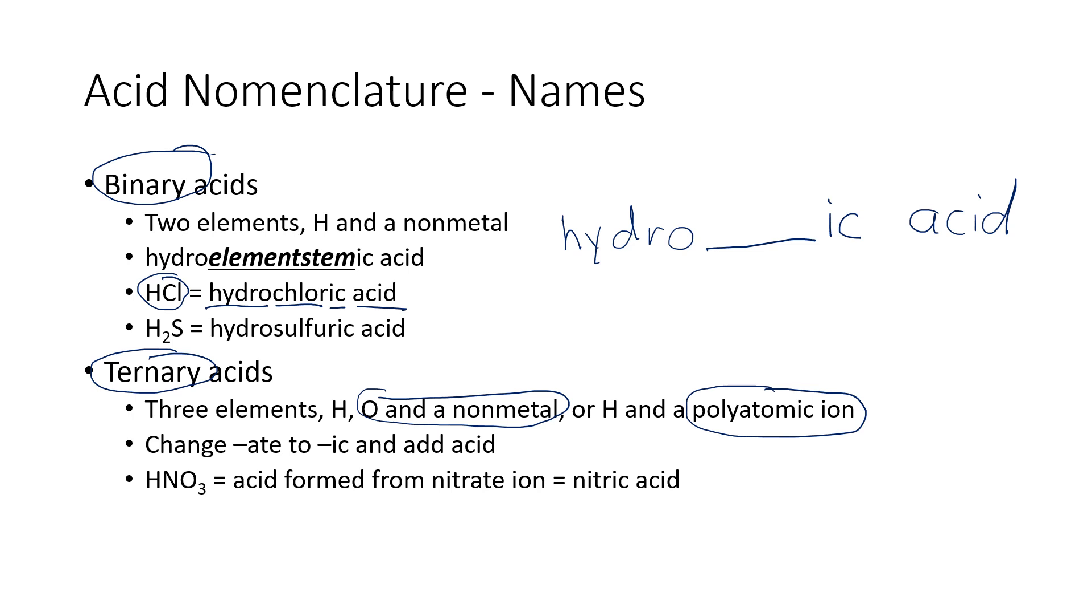With ternary acids, the pattern for naming is a little bit different. We do not use hydro. We're going to start with some sort of a stem from the nonmetal's name, and then say ick and acid. So it looks a whole lot like the binary acids, just without the hydro out front. So for instance, this example here, we've got HNO3, that's the nitrate ion, so it becomes nitric acid.